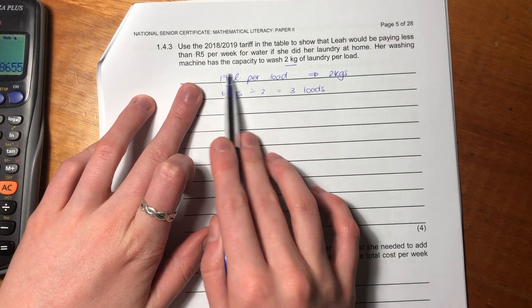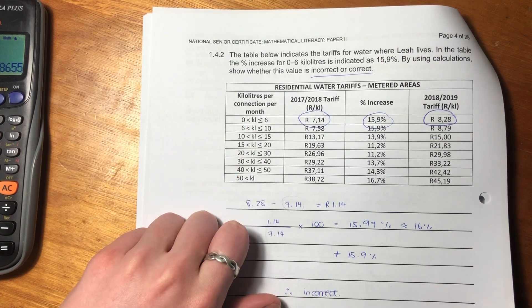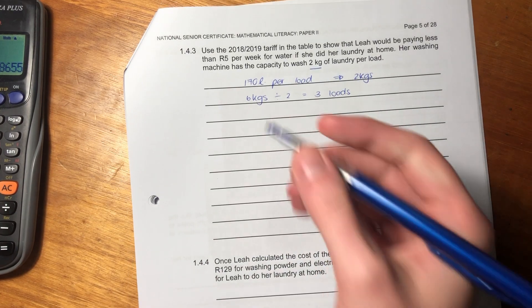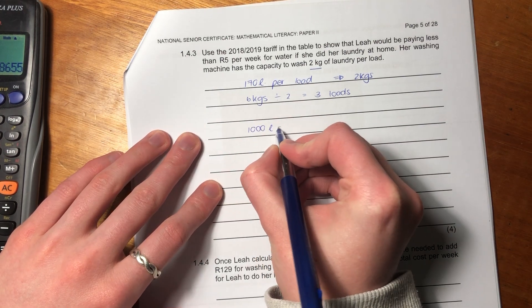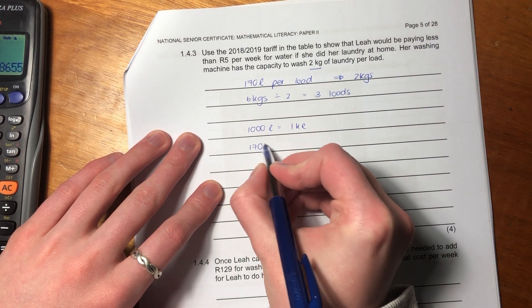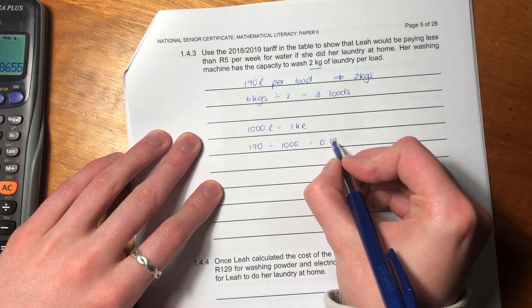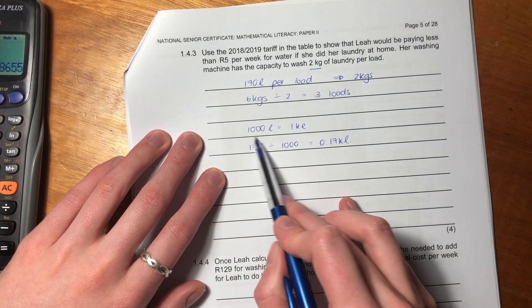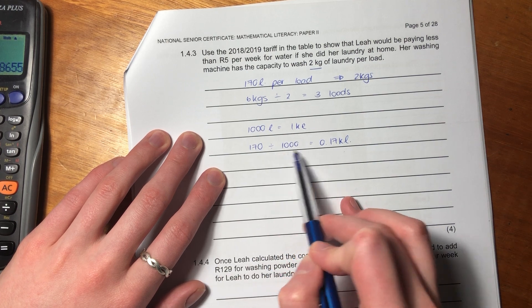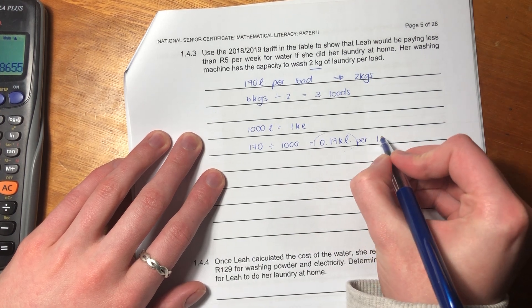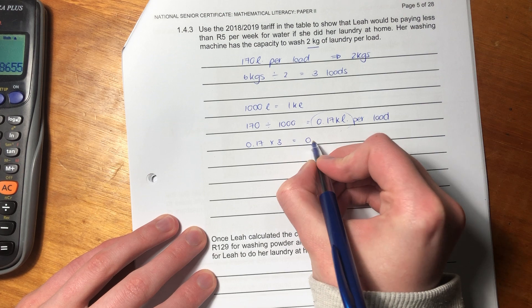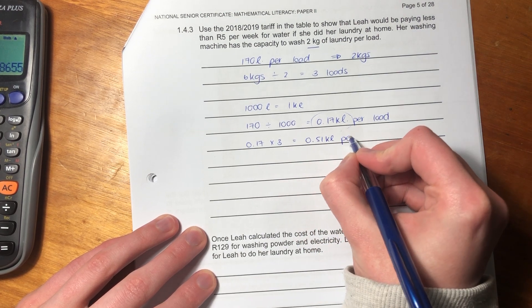If she has 6 kgs, we need to figure out how many loads she's going to have to put in during the week. We divide that by two, which gives us three loads. She's going to have three sets of 170 liters for these three loads. But what's important here is these tariff tables are in kiloliters. It's not in liters. So we have to convert this 170 liters into kiloliters so that we can use the tariff table. A thousand liters equals one kiloliter, so we say 170 divided by a thousand. I'm dividing it by a thousand because I'm going from a smaller measure to a larger measure. That's how many kiloliters she needs for one load.